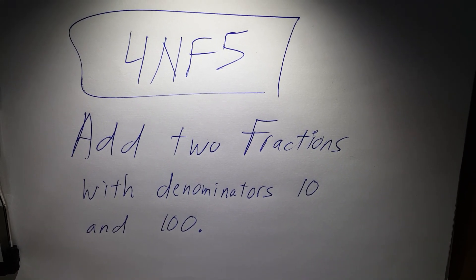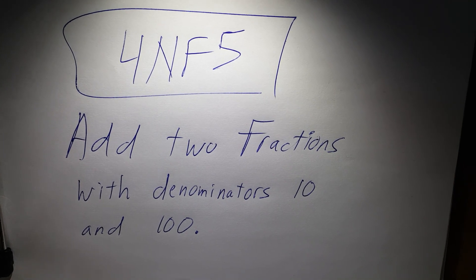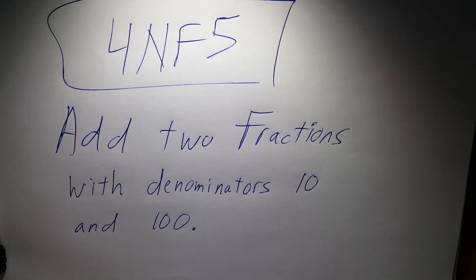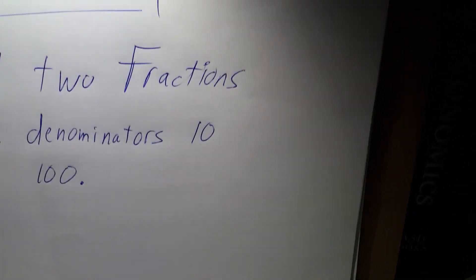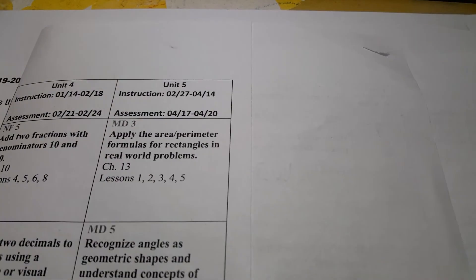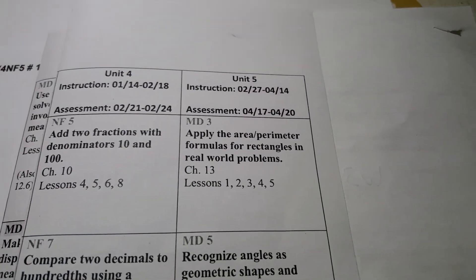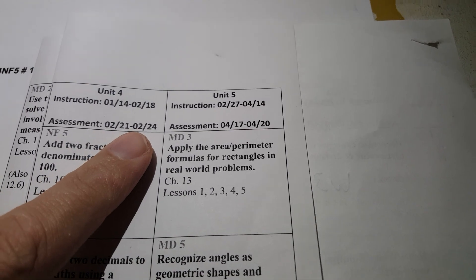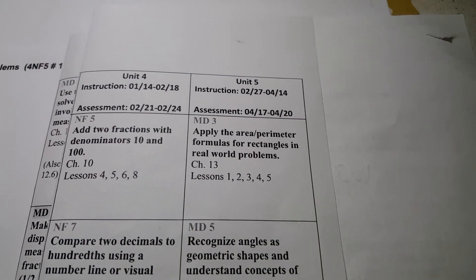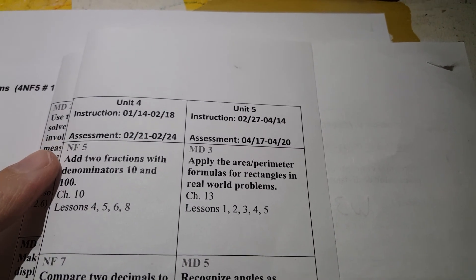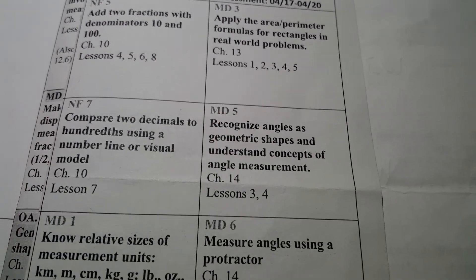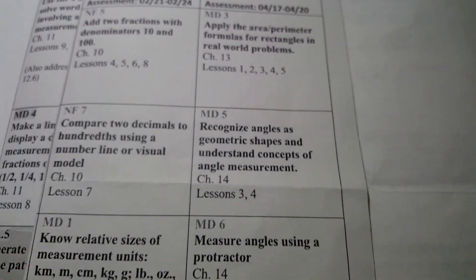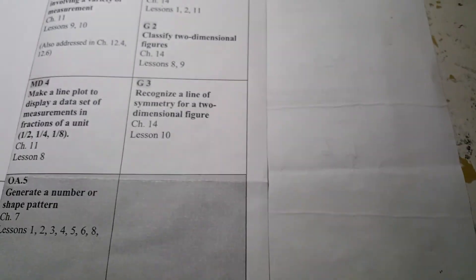Next standard is 4NF5: add two fractions with denominators 10 and 100. Here is the setup, the matrix, the almighty matrix. You can see that there are only two units left. The next assessment is February 21st and the 24th. We will focus on these standards: 4NF5, 4NF7.